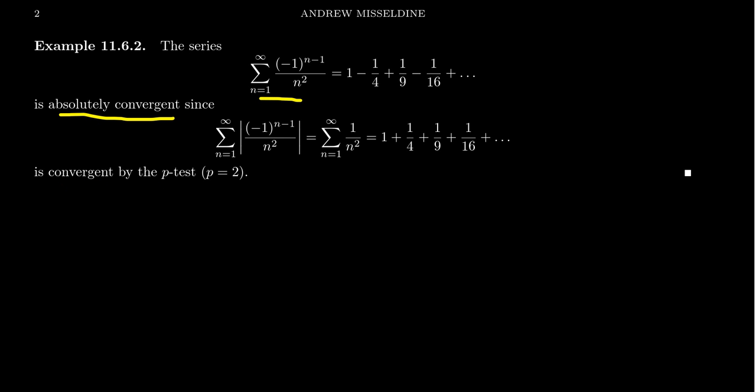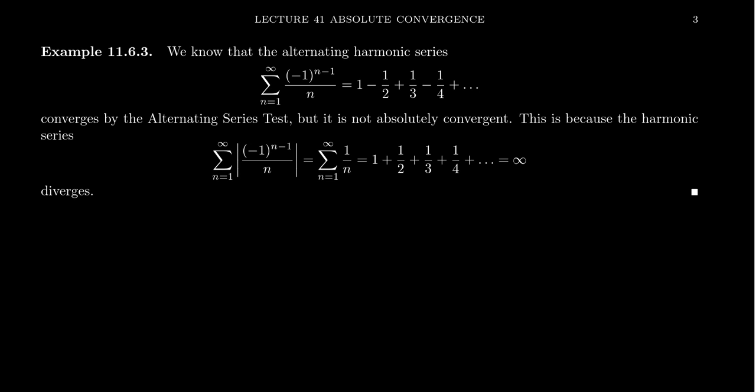One thing I should mention: if you have a positive series, that is every term in the series is positive, convergence and absolute convergence will be the exact same thing. You could have a series with some negative terms where its absolute series is something different, and therefore the convergence might be a different question.